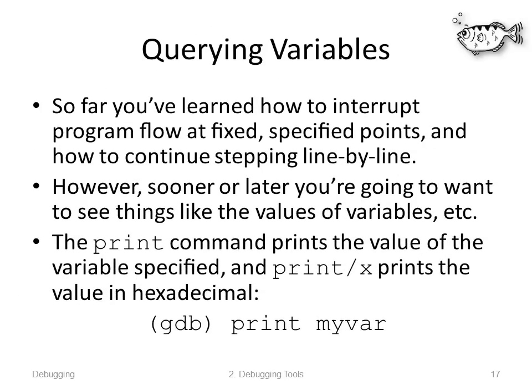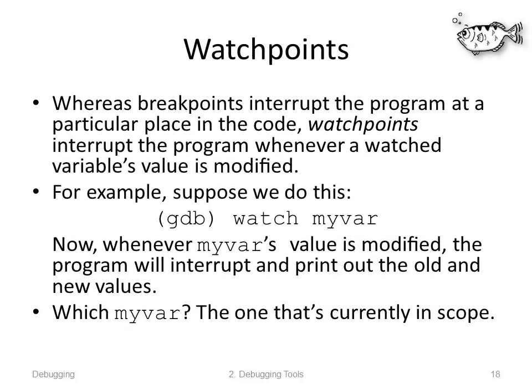Now you've learned to interrupt program flow at a specified point and step. Sooner or later you're going to want to query memory — see things like the values of variables. The 'print' command prints the value of a variable. 'print/x' prints it in hexadecimal. So saying 'print myvar', if you've got a variable called myvar in your code, it will print it out. Watchpoints interrupt whenever a watched variable is modified. If you say 'watch myvar', the next time myvar is modified, the program interrupts and prints out the old and new values. Note: if you have multiple variables named myvar with different scopes, the one currently in scope when you type the watch command is used.